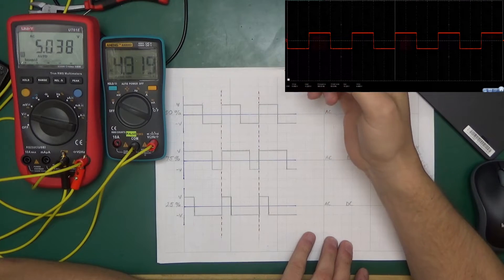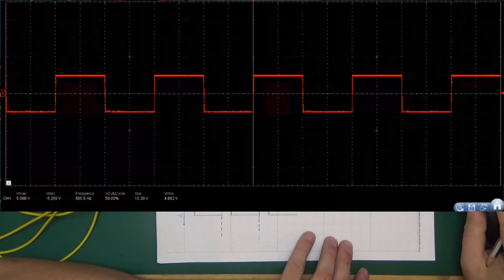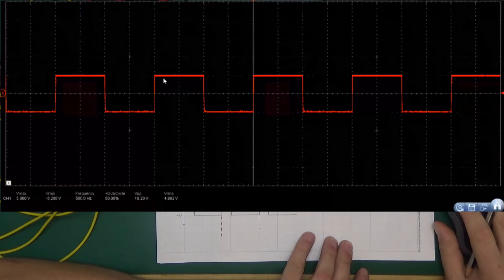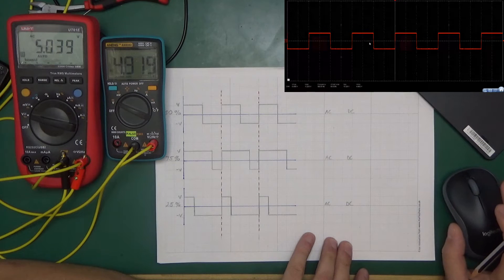Here is the first waveform that we will be looking at, and here it is on the oscilloscope. As you can see, the waveform itself is spending the same amount of time above the zero line as the same amount of time below the zero line, and this is a 50% square wave and the amplitude of the signal is, as you can see, 10 volts.